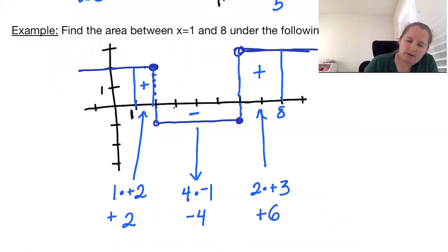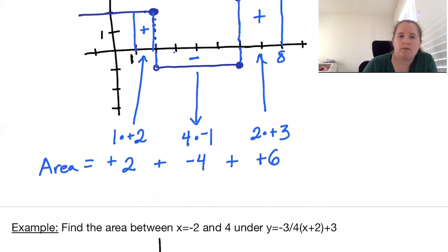So the total area will just be these pieces put together. We have positive 2 plus negative 4 is negative 2 plus 6, and we wind up with an area of positive 4.